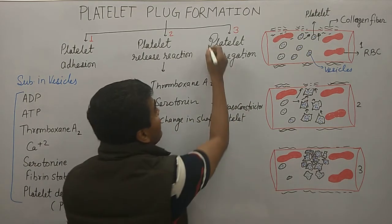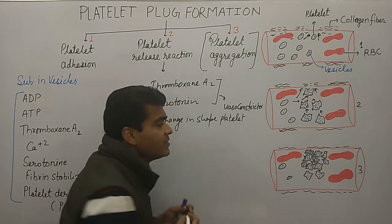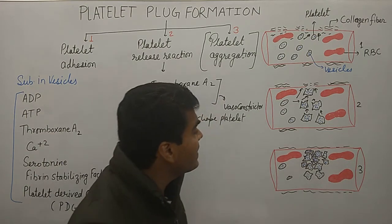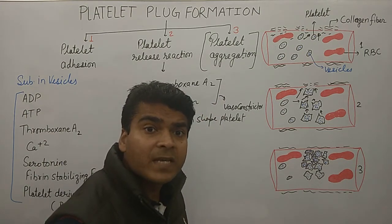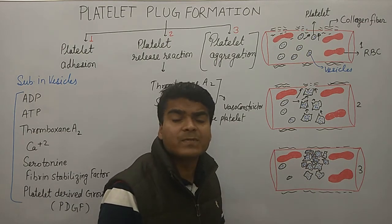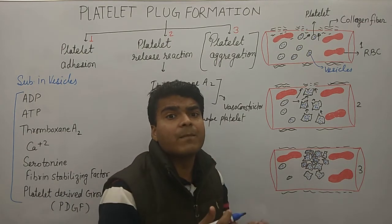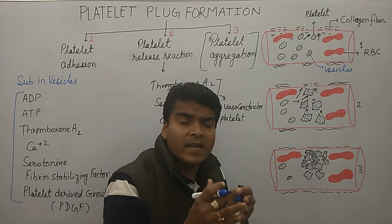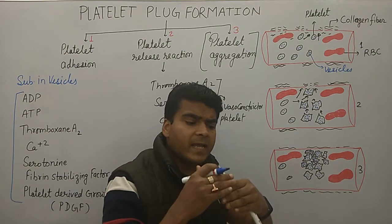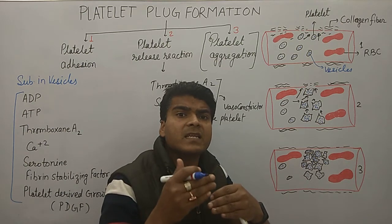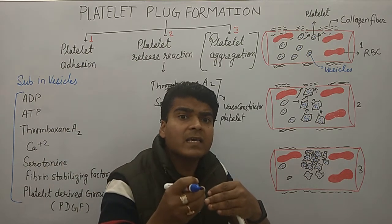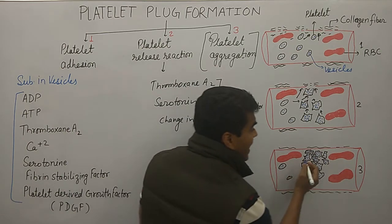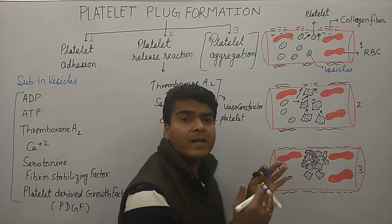The third step is platelet aggregation. In this step, the platelets are already activated and their number has increased. As more platelets arrive, they attach to each other. One platelet releases substances, the next platelet comes and sticks to it, and all the platelets become stuck together, forming the platelet plug.